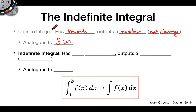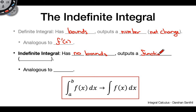That's analogous to what we're doing with the definite integral. So as you might expect, there's also an analogous feature to the general derivative — one we don't evaluate at any specific point — and that's what the indefinite integral does. It has no bounds, and it outputs a function. We call this the anti-derivative, analogous to f prime of x.